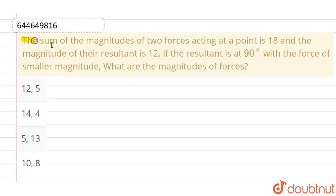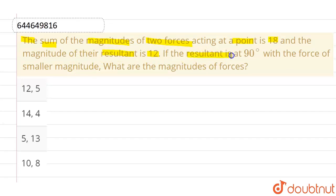Hello everyone. The given question is: the sum of the magnitudes of two forces acting at a point is 18, and the magnitude of the resultant is 12. If the resultant is at 90 degrees with the force of smaller magnitude, what are the magnitudes of the forces? These are the given options.